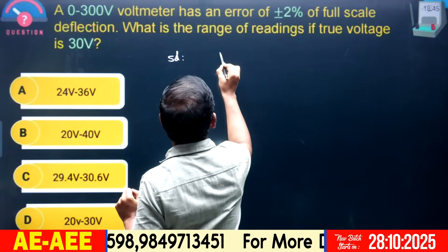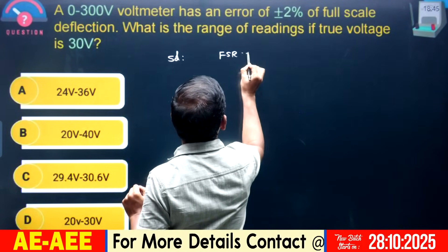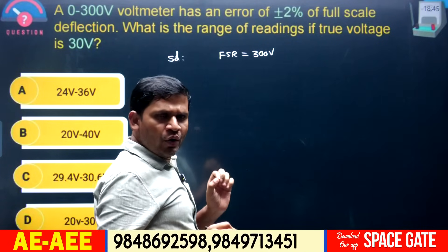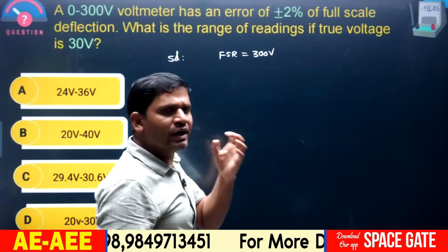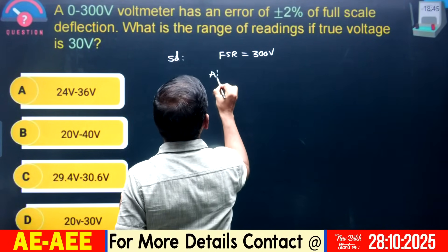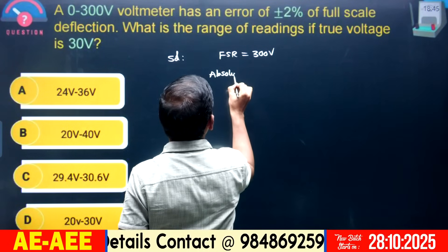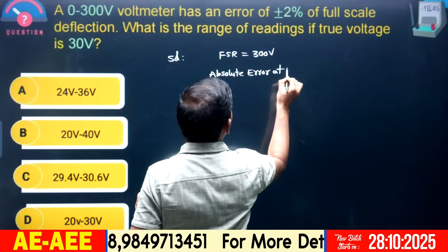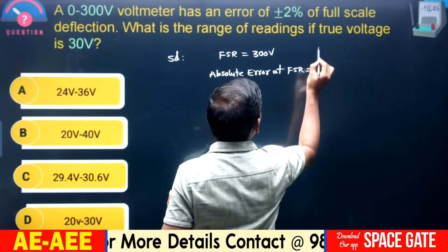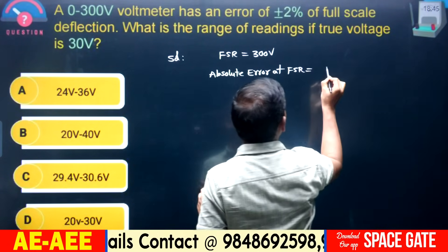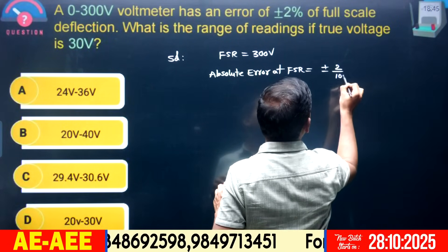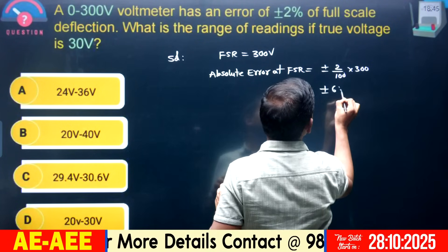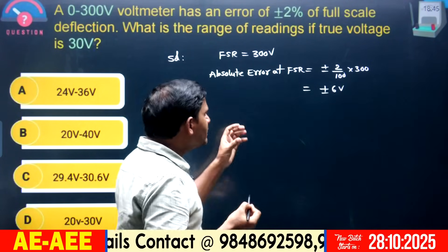The full scale reading is 300 volts. Calculate the absolute error at full scale: it is 2% of full scale, which is ±(2/100) × 300 = ±6 volts. This is the absolute error.